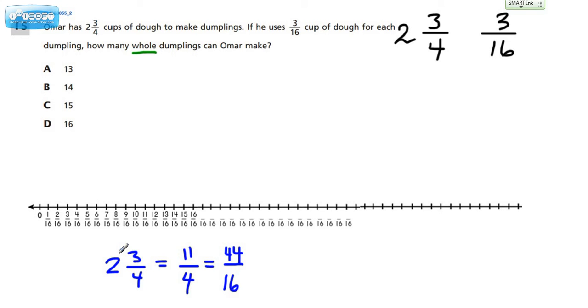If he uses three-sixteenths cup of dough for each dumpling, how many whole dumplings can Omar make? And that's the most important part, I think, is whole dumplings. Now, what I've done here is we're taking this amount of dough, and we're going to break it up into equal groups of three-sixteenths. So, to help your brain wrap itself around that concept, I've created this number line.